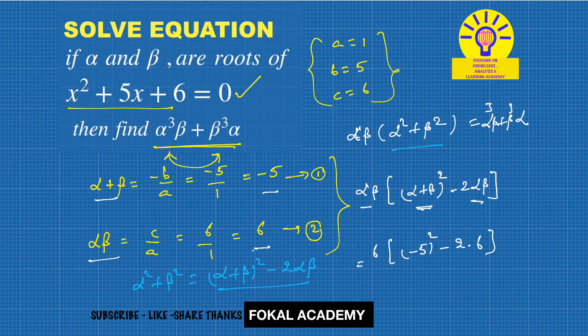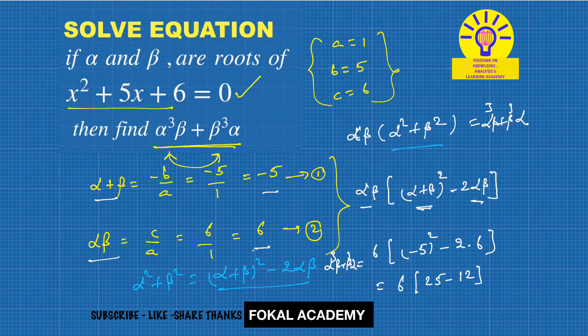That equals 6 × 25 - 12, which equals 6 × 13, that is 78.